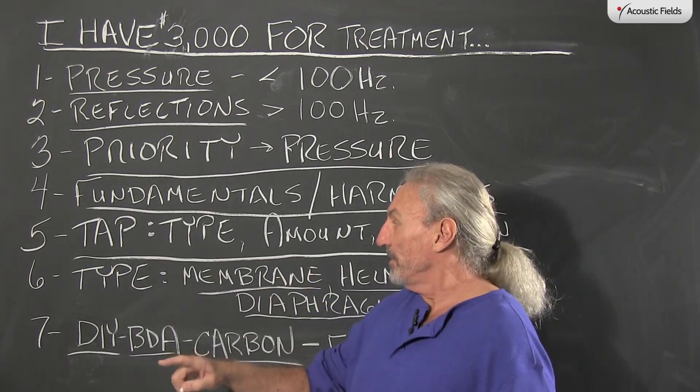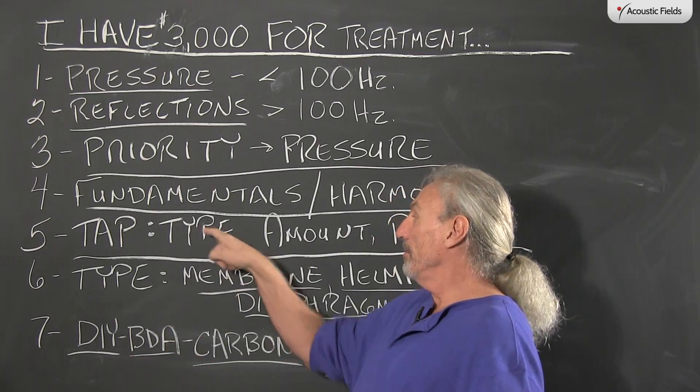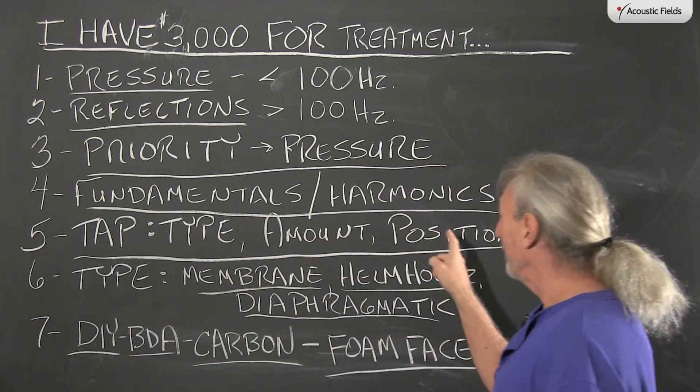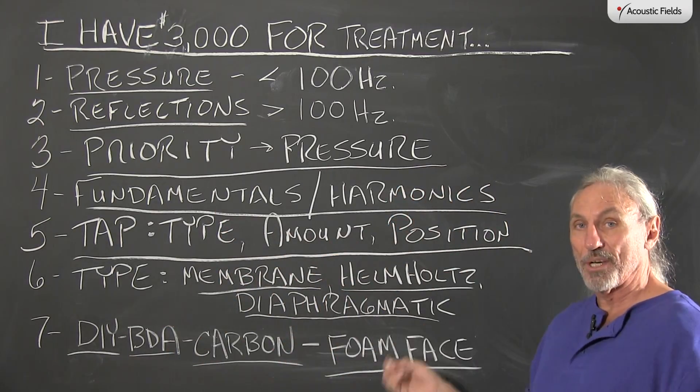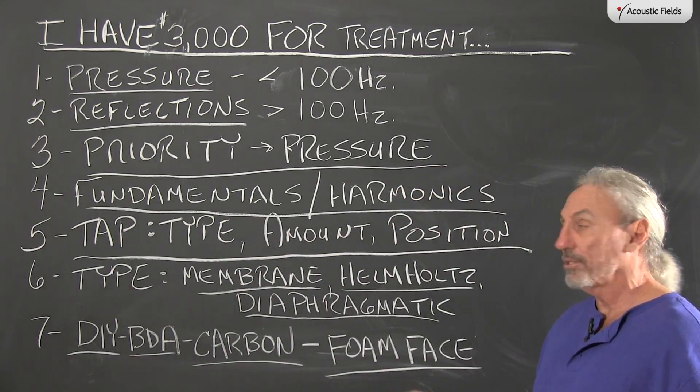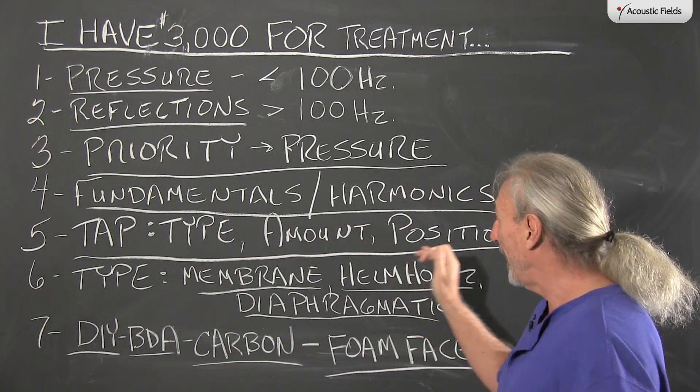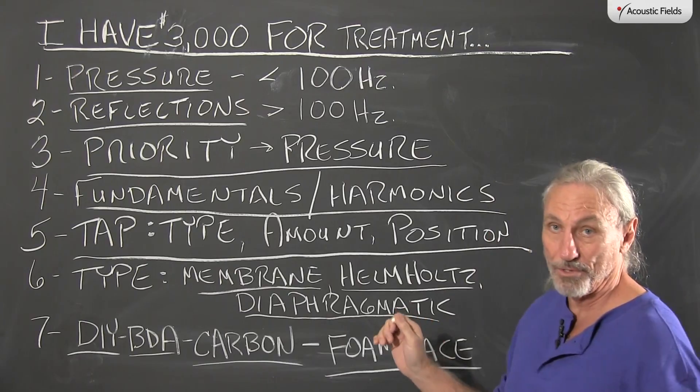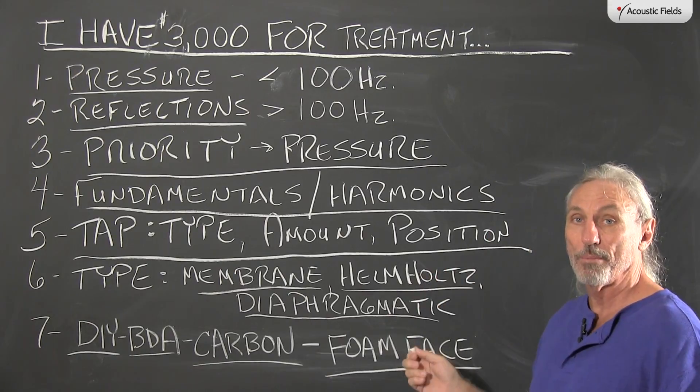TAP is the acronym we're going to use — Type, Amount, and Position. What type are we going to use? What amount, meaning how many units? And where are we going to put them?